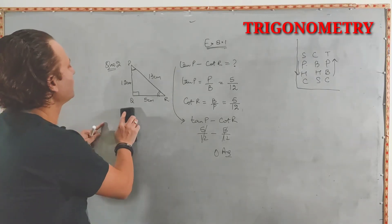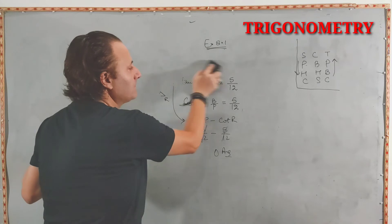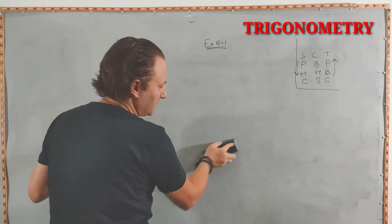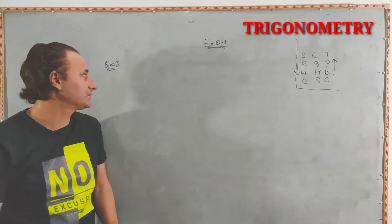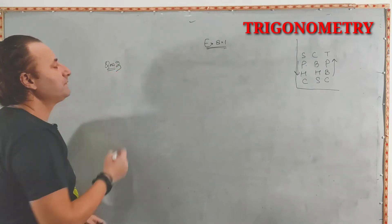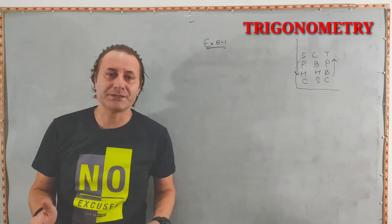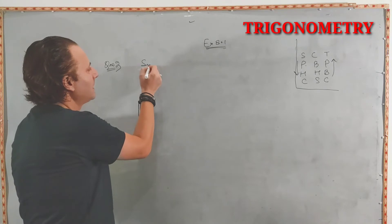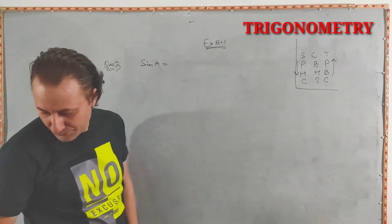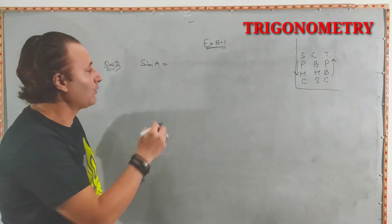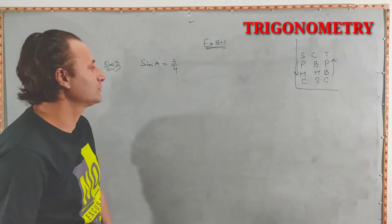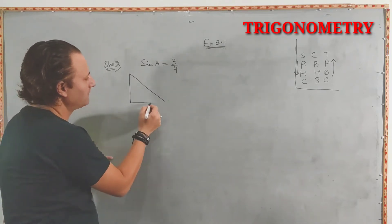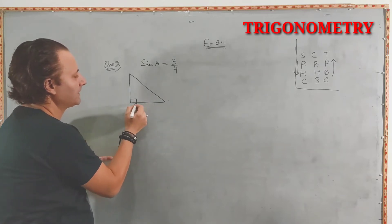Trigonometry is very easy. You just need to keep in mind that there are a few formulas and tables to be sure about. If you know the formulas and tables, trigonometry is an easy game. Now question 3 is a bit different. It says sin A equals 3 upon 4. We will draw a right-angle triangle first with angle A, B, and C.